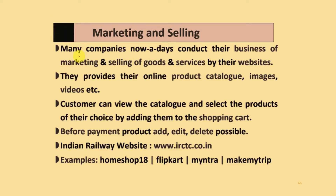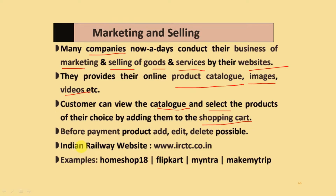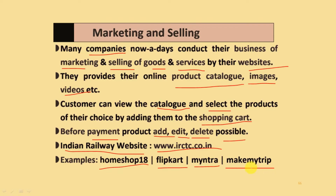Marketing and selling: different companies nowadays conduct their marketing and selling of goods and services through their websites. They provide online product catalogues, images, and videos. Customers can view catalogues and select products of their choice by adding them to the shopping cart. Before payment, options to add, edit, or delete products are possible. Examples include the Indian Railway website irctc.co.in, Home Shop 18, Flipkart, Myntra, and MakeMyTrip.com.